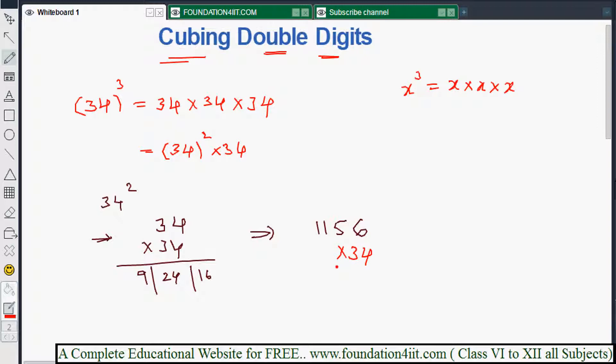Because square of 34 is 1156. Now this number I should multiply by 34. Any number multiplication with 2 digit, there's a video I did. You can find out this value. Links are there.